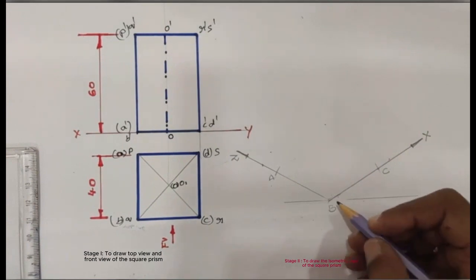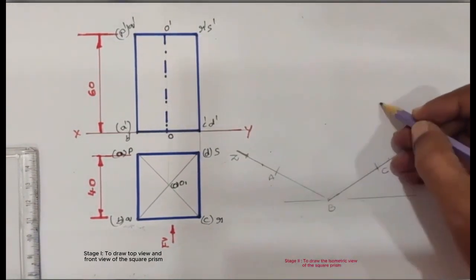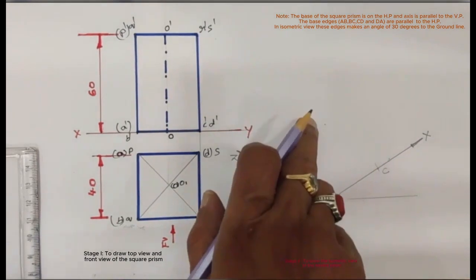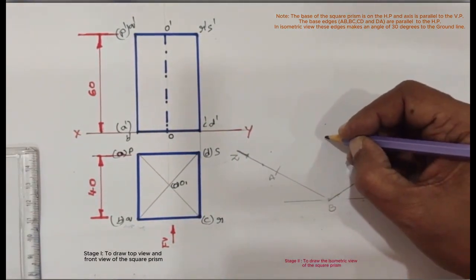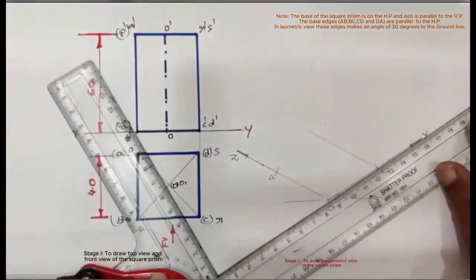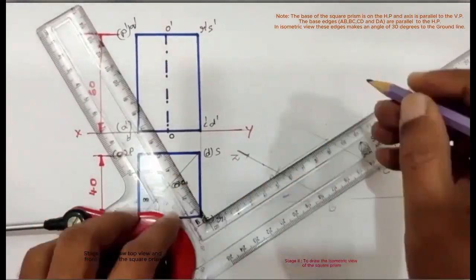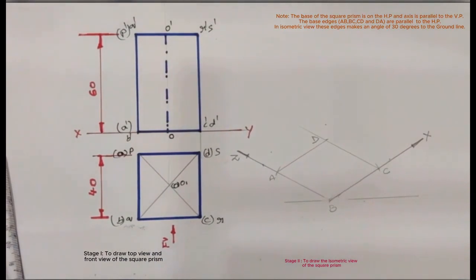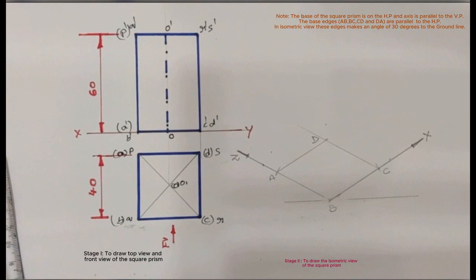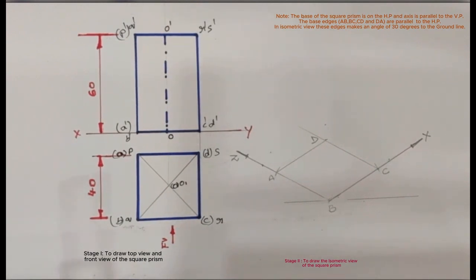After that, parallel to BC passing through A, draw a line. Parallel to AB passing through C, draw another line. Both lines intersect at point D. Drawing the bottom base of the square prism in isometric view is completed. Because the base ABCD is on HP, the edges AB, BC, CD, and DA make an angle of 30 degrees to the ground line.